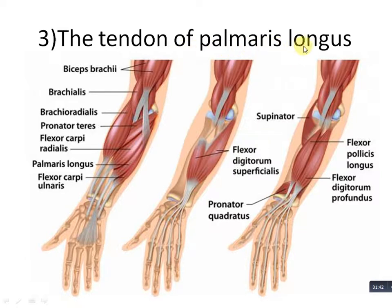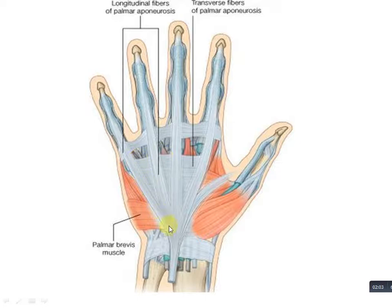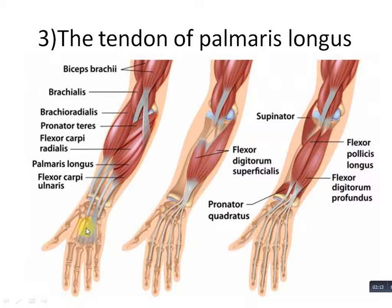The third structure passing superficial to the flexor retinaculum is the tendon of palmaris longus. Palmaris longus is a muscle of the forearm, and its tendon is directly attached to the palmar aponeurosis. The palmar aponeurosis is located quite superficial to the flexor retinaculum, so since the tendon is directly attached to the palmar aponeurosis, it must also pass over the flexor retinaculum.